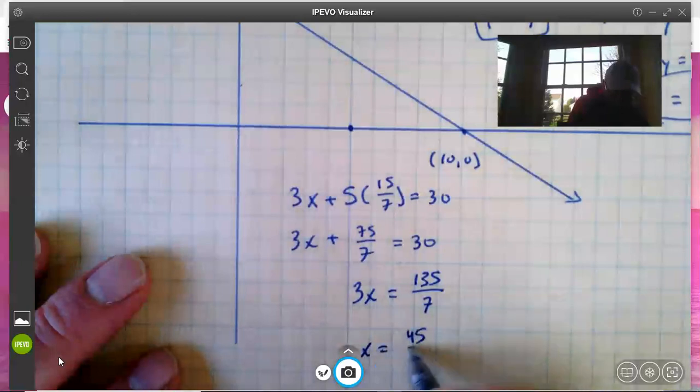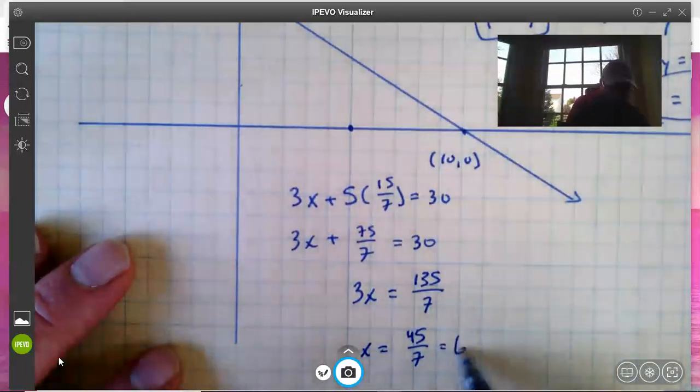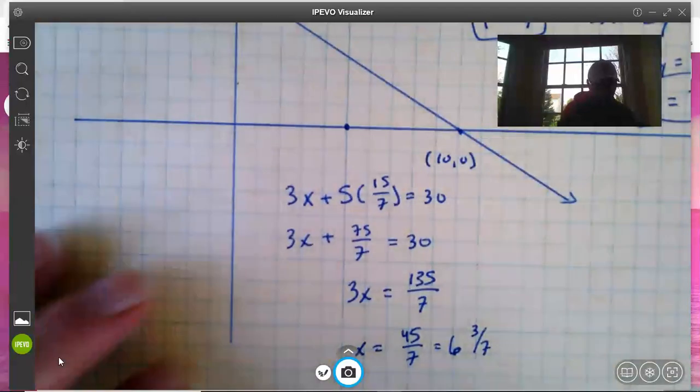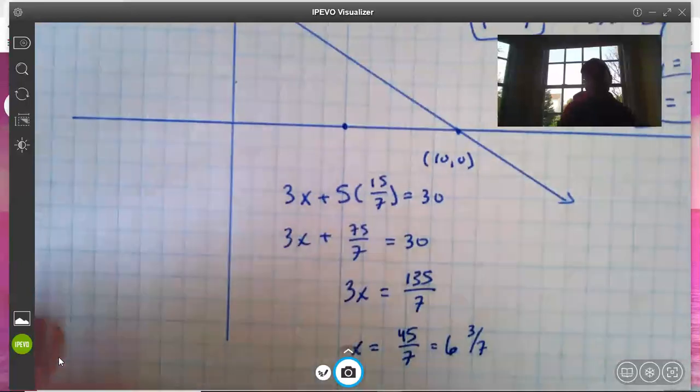Which is—let's see, 42/7 would be 6—so that is 6 and 3/7. So it's a little bit over 6 and not quite 6 and a half.